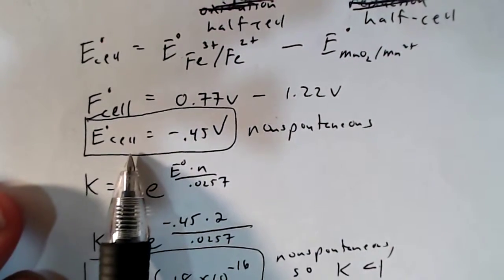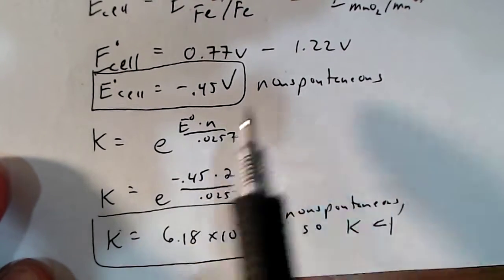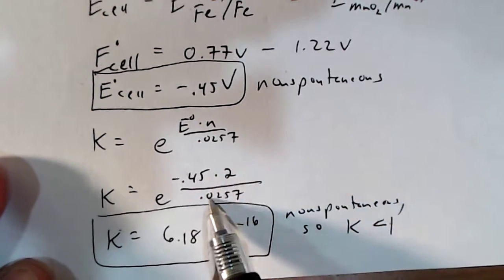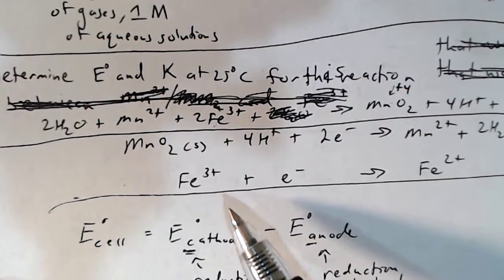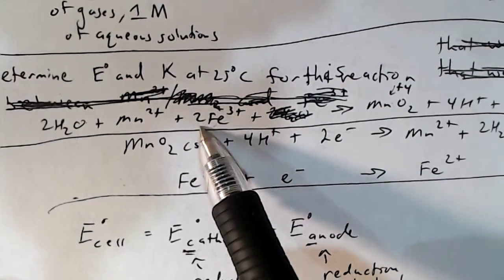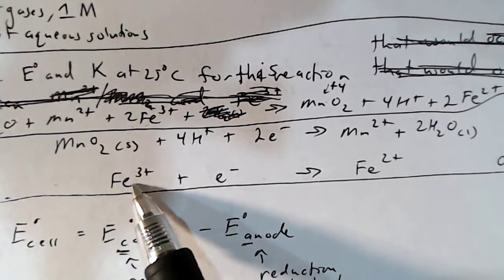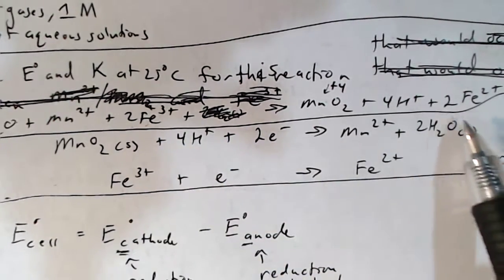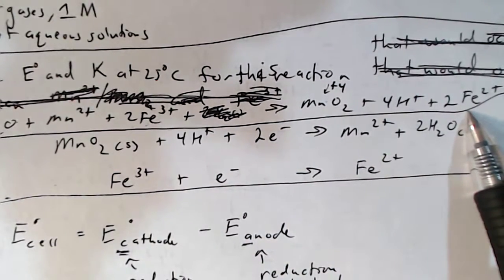Now that we know the voltage of the entire cell, we can calculate K using this equation. We plug in E = −0.45 volts and 0.0257. For N: going back to the balanced chemical equation, two Fe³⁺ turned into two Fe²⁺. Every time Fe³⁺ turns into Fe²⁺ it needs one electron, and that happened twice, so there are two electrons being absorbed by iron. N equals 2.